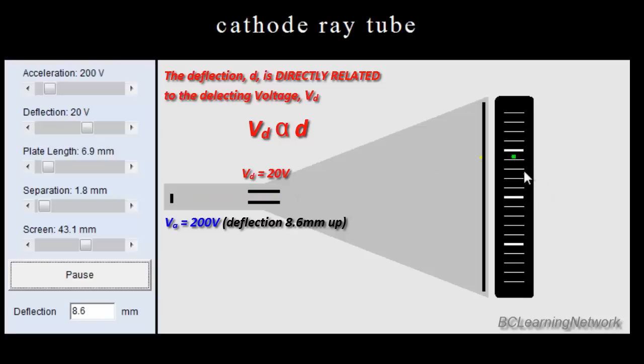Now my original deflection was 4.3 when the accelerating voltage was 400. If I half the accelerating voltage, my deflection doubles. So it's an inverse relationship. Half the accelerating voltage, double the deflection.